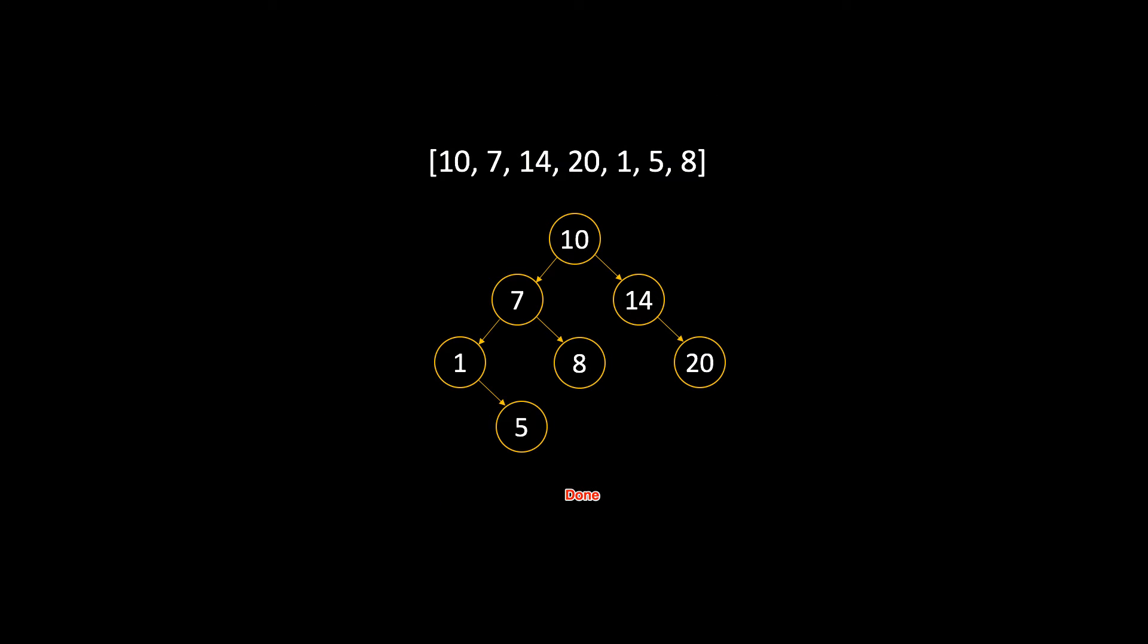Lastly, we'll insert the value 8 into the tree. With 8 being less than 10, we move it to the left and compare it with 7. 8 is greater than 7, so we move it to the right and complete the tree, making 8 the right child of 7.